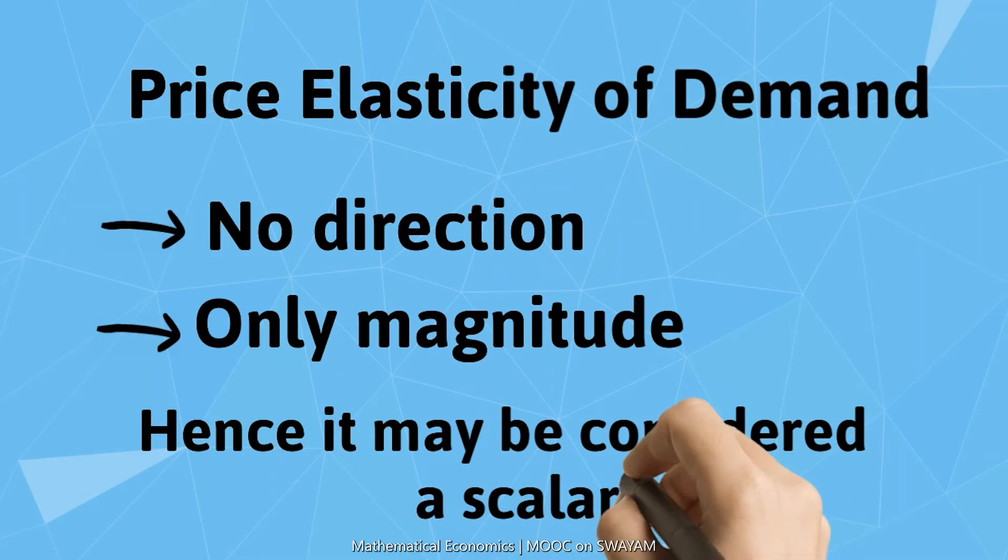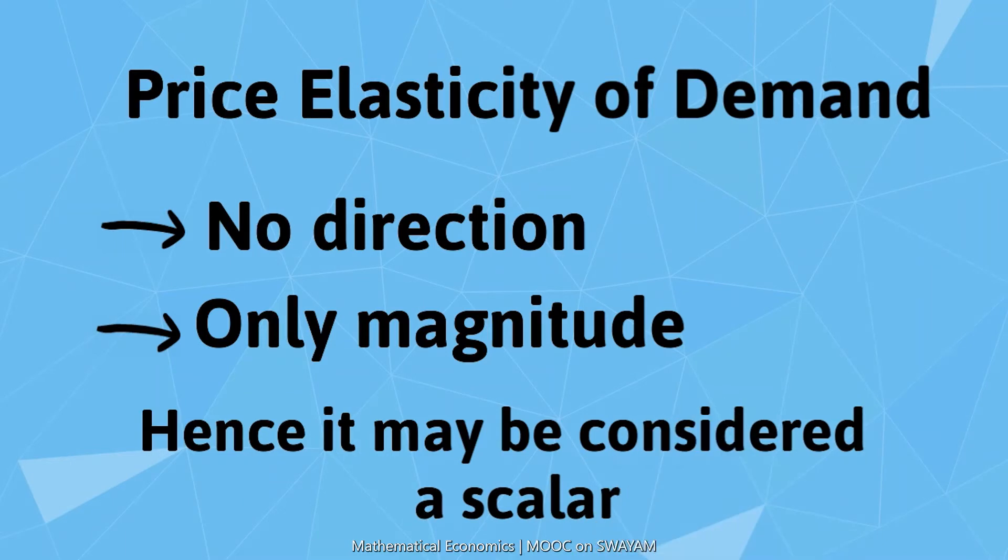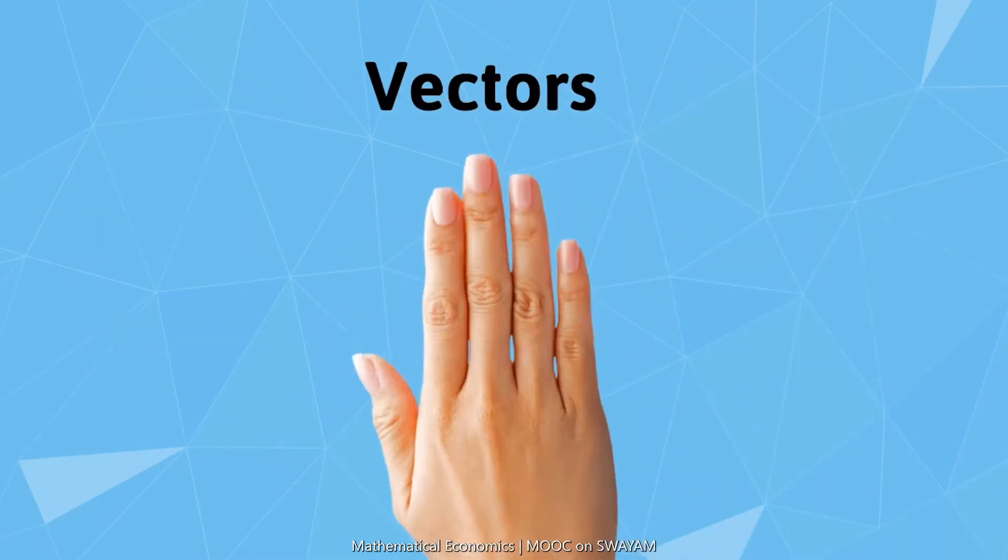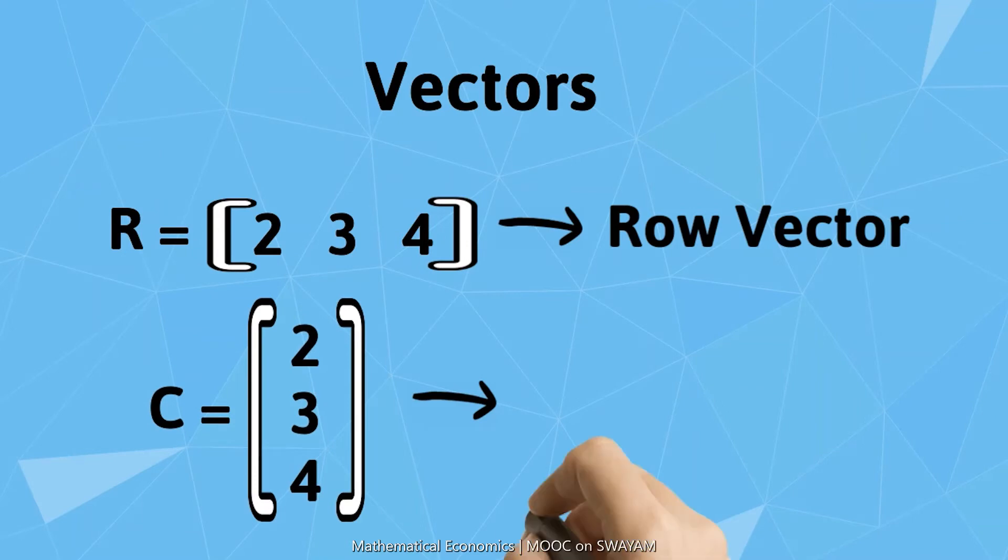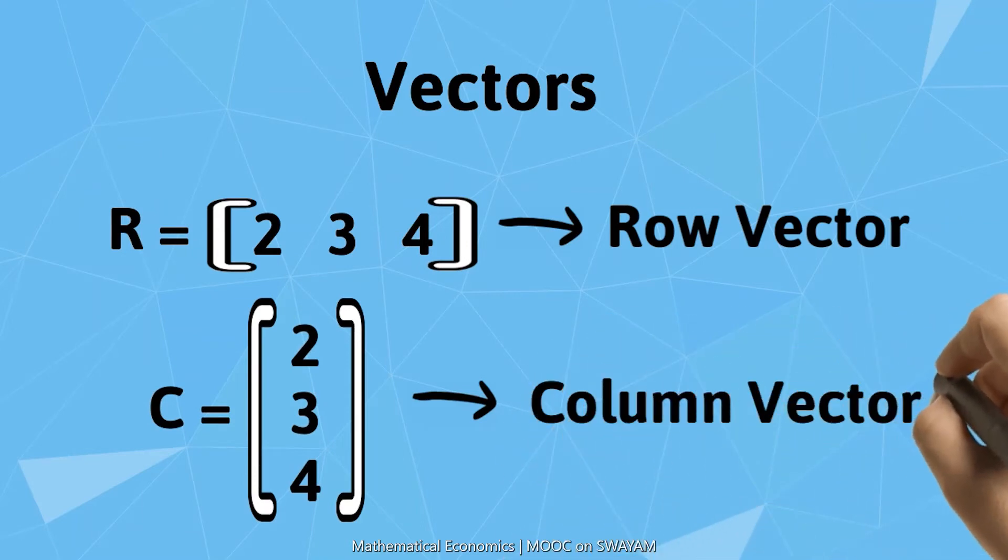In mathematical language, a vector is a special type of matrix that has only one row or one column. If a matrix has one row, it is referred to as a row vector. If a matrix has one column, it is referred to as a column vector.